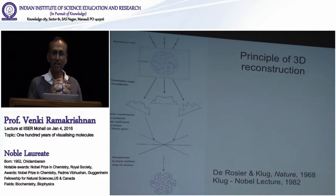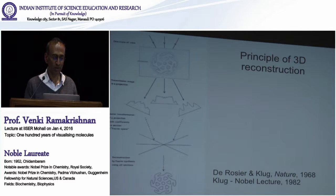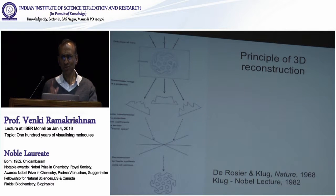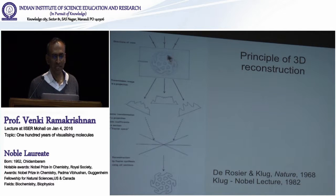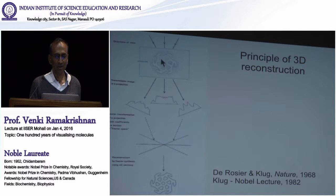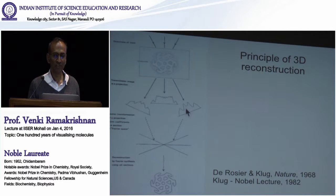So how does electron microscopy work to make three-dimensional images of molecules? A big breakthrough was made by Aaron Klug, who was a former director of the MRC lab where I work. He was also a postdoc of Rosalind Franklin, which is interesting. He realized that when you make an image from an electron microscope, it's essentially a two-dimensional projection of the object.